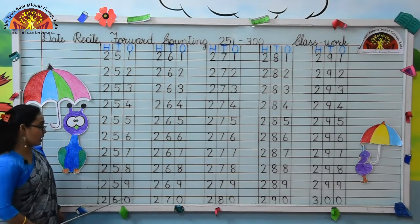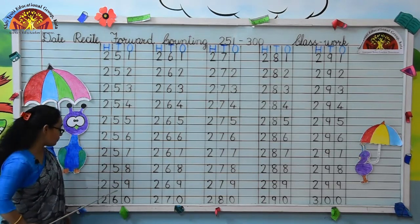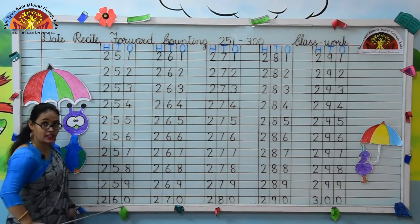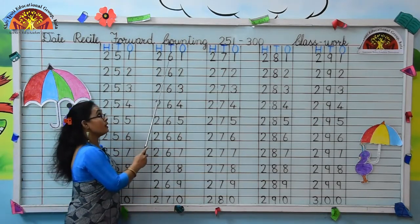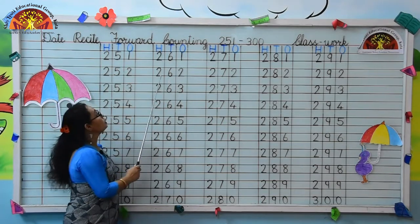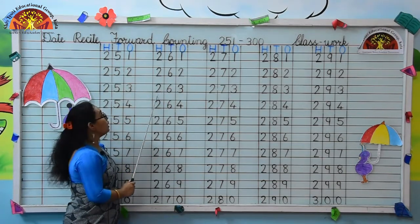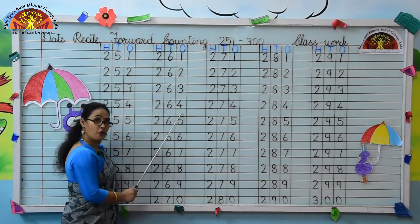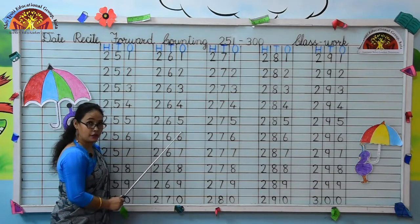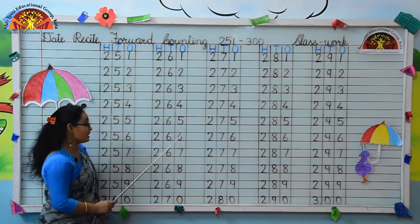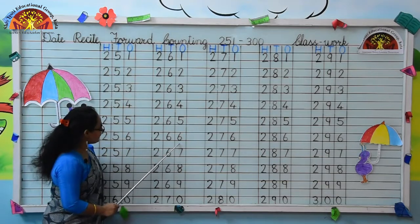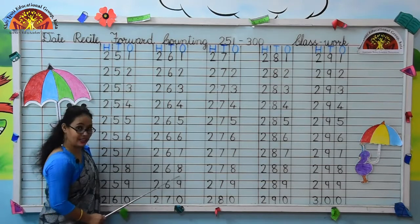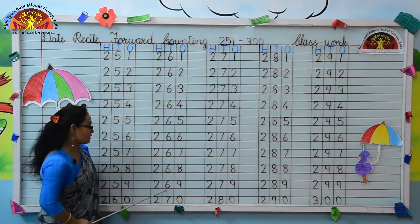Yes kids, now you tell me what comes after 259. Very good kids, 260. Next is 261, 262, 263, 264, 265, 266, 267, 268, 269.